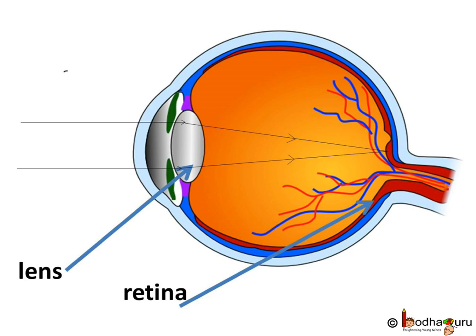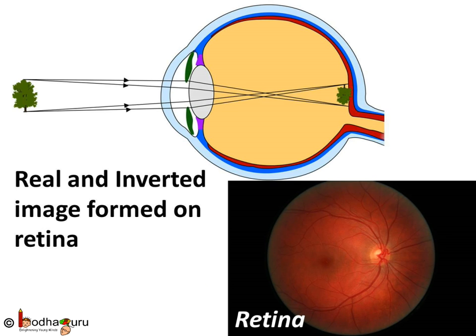Now, light coming through the pupil falls on a lens and focuses the light on the retina. The eye lens forms an inverted real image of the object on the retina. But what we actually see is an erect image, and in terms of colors, we can say it is far richer than footage shot by expensive HD cameras.